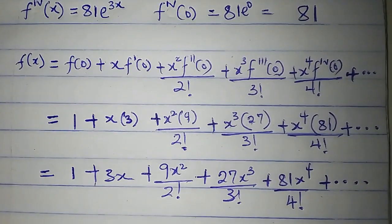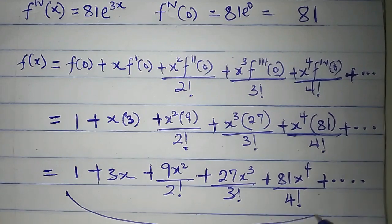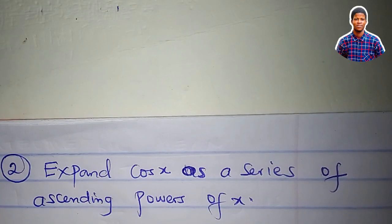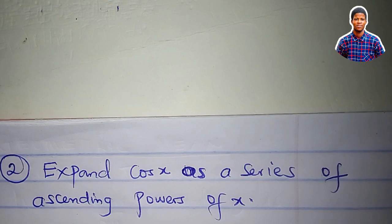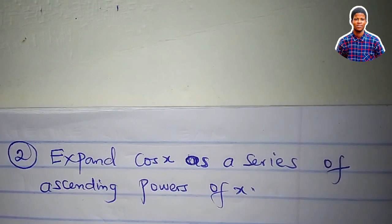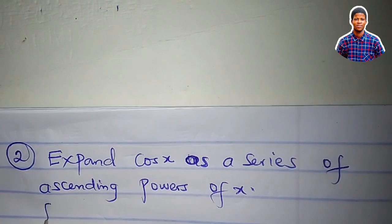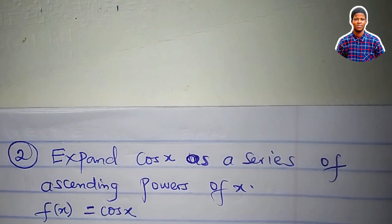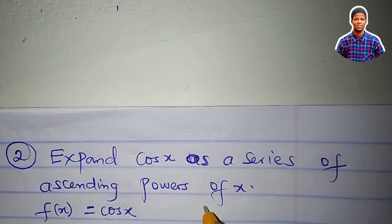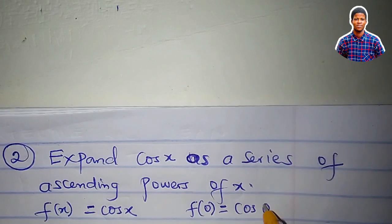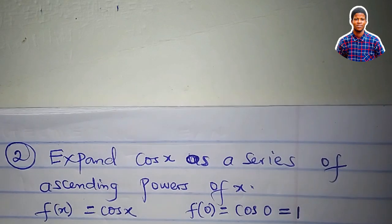Now let's expand cos x as a series of ascending powers of x. We are still using the Maclaurin series theorem for expansion. The function we are given is f of x equals cos x. So we have to get f of 0, which is cos 0. Cos 0 is actually equal to 1.